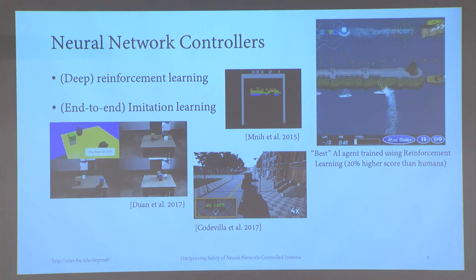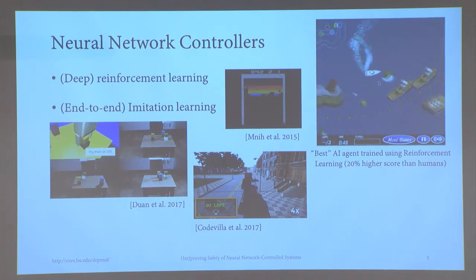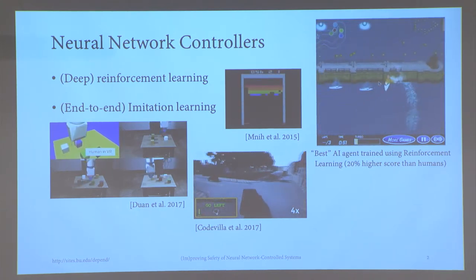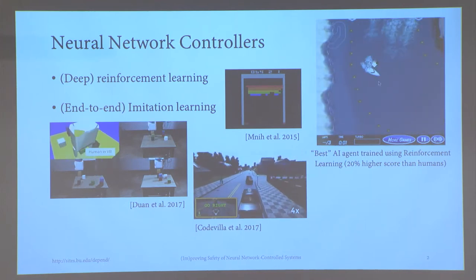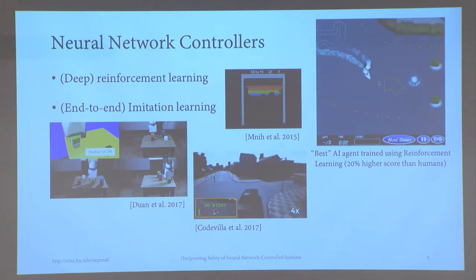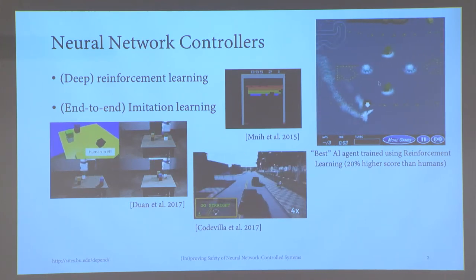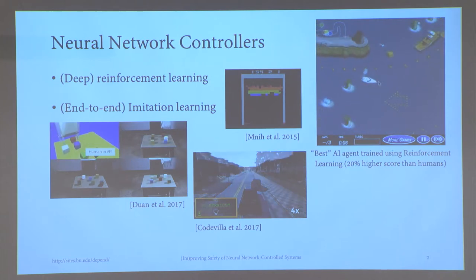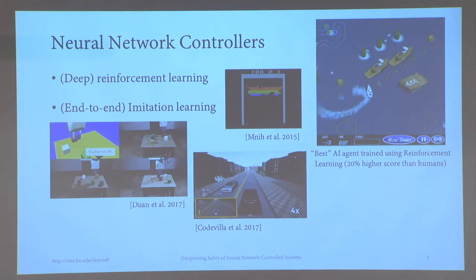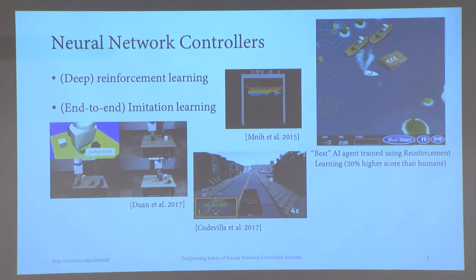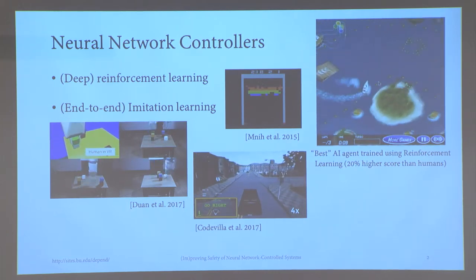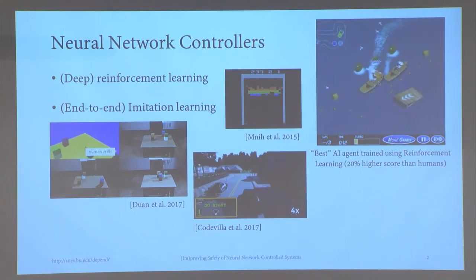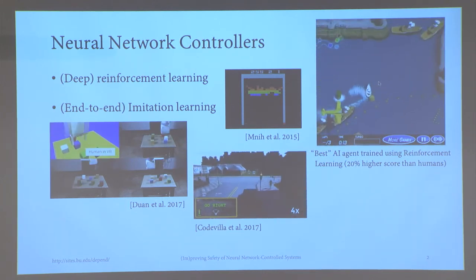Another popular learning paradigm is imitation learning, where you transfer the knowledge of an expert — oftentimes a human expert — to a learning agent. People have tried to do this end-to-end for robotic tasks or in simulated autonomous driving environments.